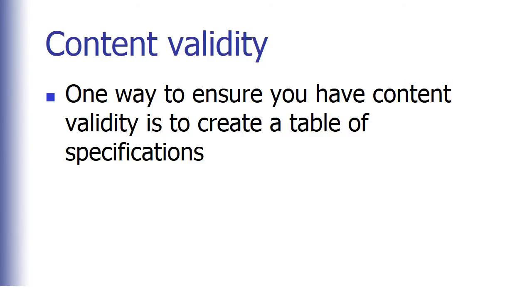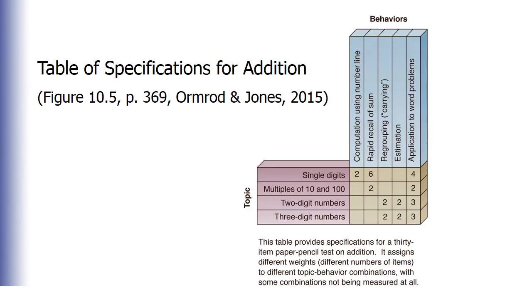A table of specifications for addition might look something like this, where the rows include different topics such as single digits, multiples of 10 and 100, two-digit numbers, and three-digit numbers. The columns show the different behaviors that students are supposed to be able to do, such as computation using the number line and rapid recall of the sum. This table provides specifications for a 30-item paper-pencil test on addition.